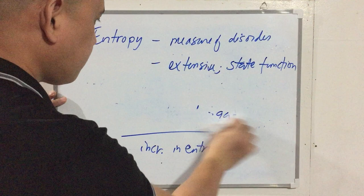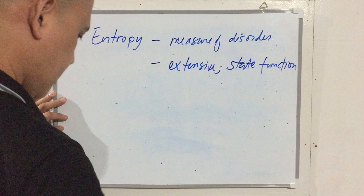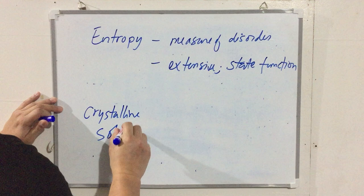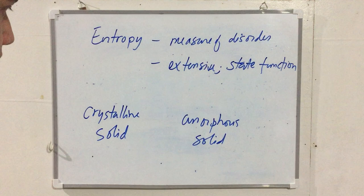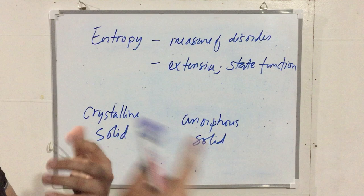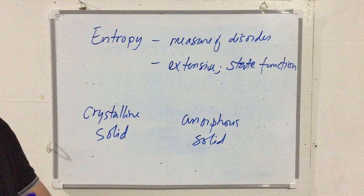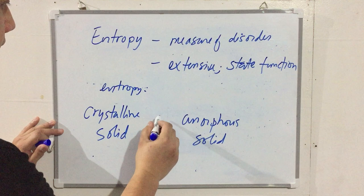The concept of disorder also applies to other transitions. Comparing a crystalline solid — like salt, which has a lattice — to an amorphous solid like glass: glass has no regular arrangement of particles. In terms of entropy, the amorphous solid has higher entropy than the crystalline solid.